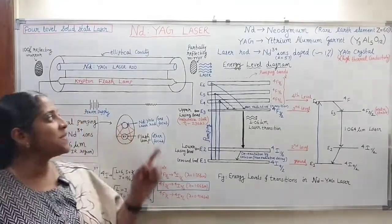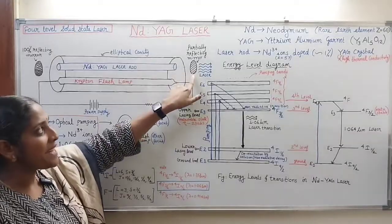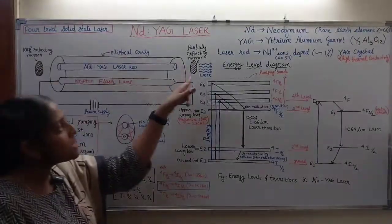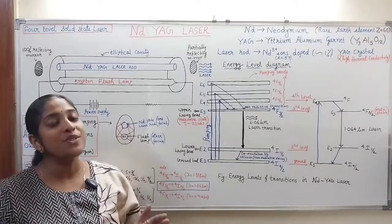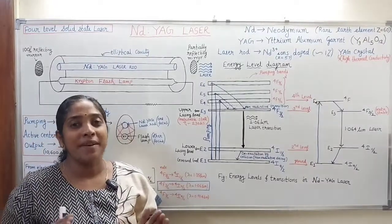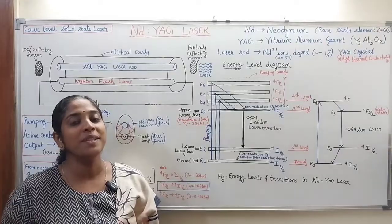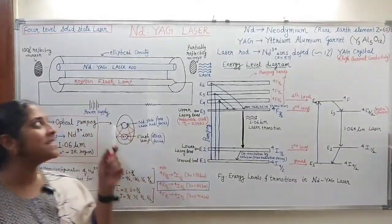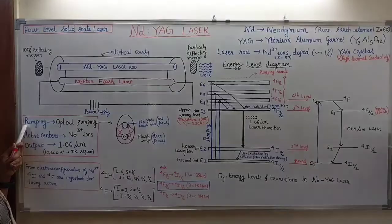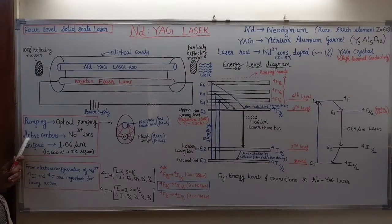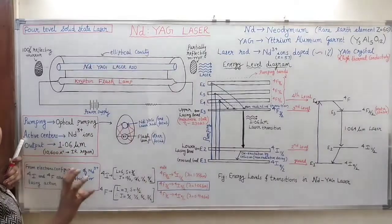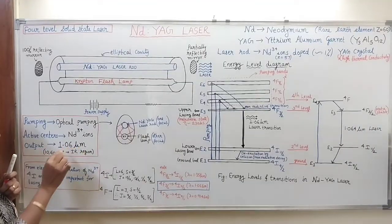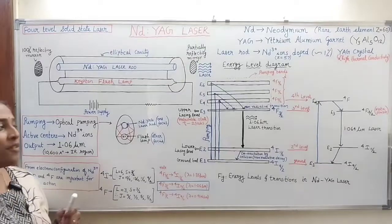At the two ends of the laser rod, we have two mirrors: one is a partially reflecting mirror and the other is a 100% reflecting mirror. Together they constitute the optical resonator, which is important for light amplification. Nd:YAG laser is a four-level solid-state laser; the pumping method is optical pumping, the active medium is neodymium ions, and the YAG acts as the host lattice. The output wavelength is 1.06 micrometers, that is 10,600 Ångströms.